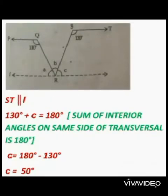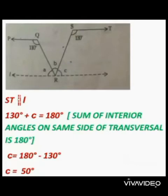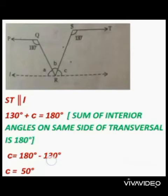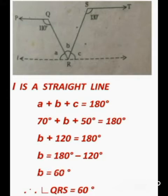Now, line ST is parallel to line L and SR is a transversal. By the same reason — sum of interior angles on the same side of a transversal is 180 degrees — angle C plus 130 degrees equals 180 degrees. Transposing 130 to the other side: angle C equals 180 minus 130 degrees, so angle C is equal to 50 degrees.